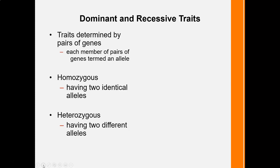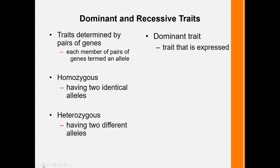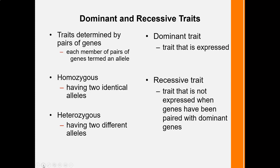When an individual has two identical alleles, whether both recessive or both dominant, the person is homozygous — homo meaning the same, two identical alleles for that trait. When the individual has two different alleles, a dominant and a recessive, they are heterozygous for that trait. In a dominant trait, all you need is one dominant allele and that dominant trait is expressed. However, for a recessive trait to be expressed, the person has to inherit both recessive alleles and be homozygous for that trait.